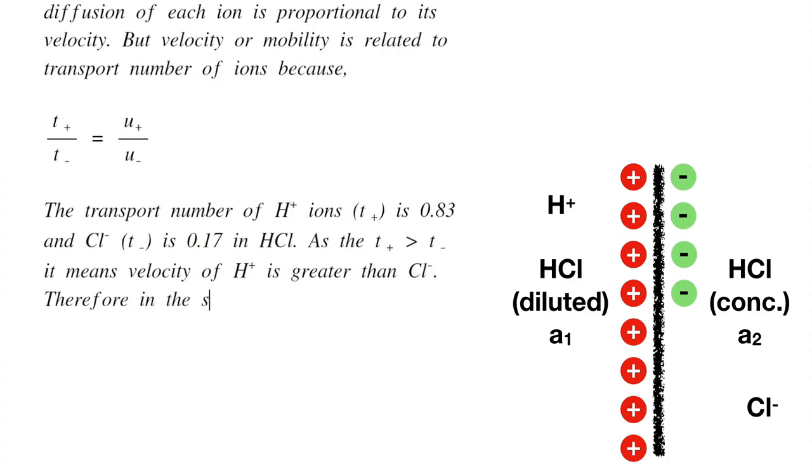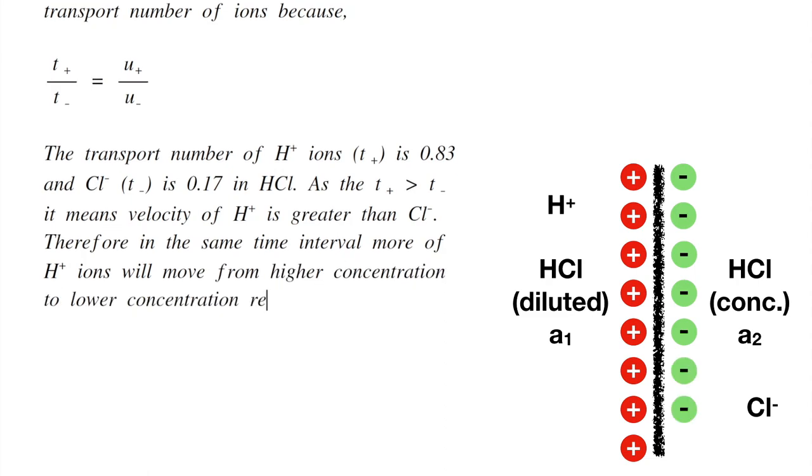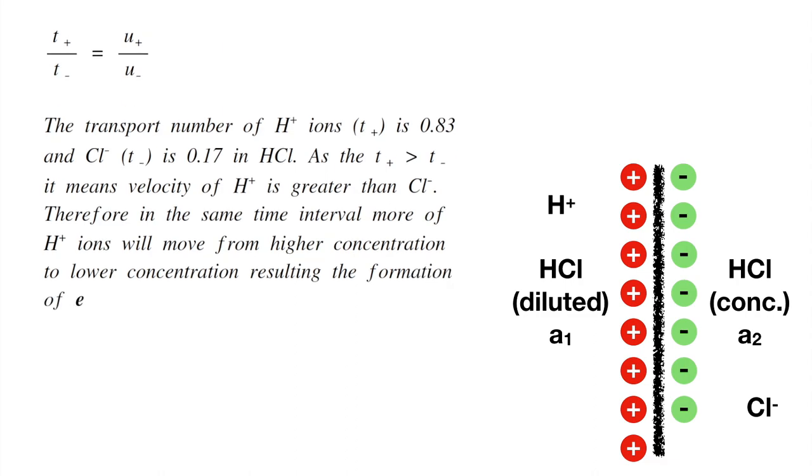Therefore, in the same time interval, more hydrogen ions will move from higher concentration to lower concentration, resulting in the formation of an electrical double layer across the membrane.